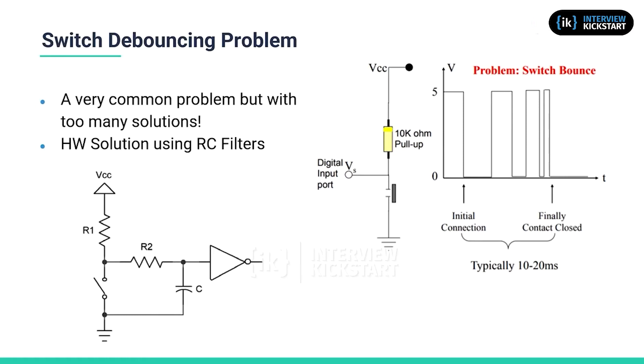The picture on the right shows that when the button is pressed, it's supposed to show a high voltage, which is 5 volts in this case. Instead of being a straight 5 volts for the duration it's pressed, which is basically when the contact is closed.